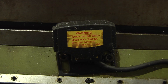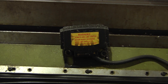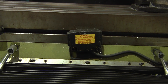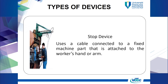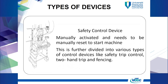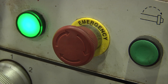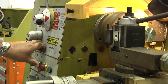There are four types of devices used for protection against machinery hazards. Number one: presence sensing device — this device will stop the machine or disrupt the work cycle if a worker is in the danger zone. Number two: pullback device — uses a cable attached to the worker's hand or arm, usually used for machinery with tripping action features. Number three: stop device — uses a cable connected to a fixed machine part that is attached to the worker's hand or arm. Number four: safety control device — this device is manually activated and needs to be manually reset to start the machine.